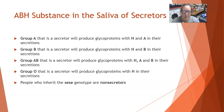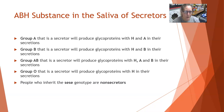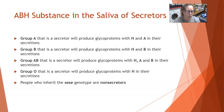So what ABH substance can you expect to find in the saliva of secretors? A group A secretor will produce glycoproteins with H and A in their secretions — predominantly A, but some H. Group B secretors will produce H and B soluble substances — predominantly B, but some H. Group AB secretors will produce H, A, and B in their secretions, with more A and B than H, but all will be present. Group O secretors will only produce the H substance in their secretions.